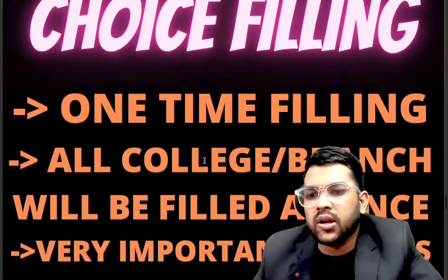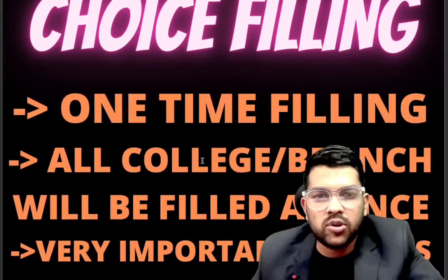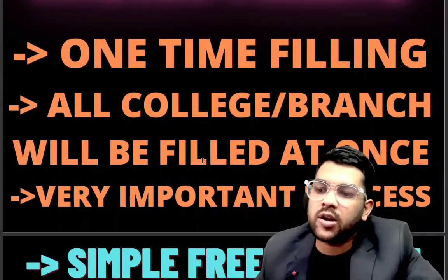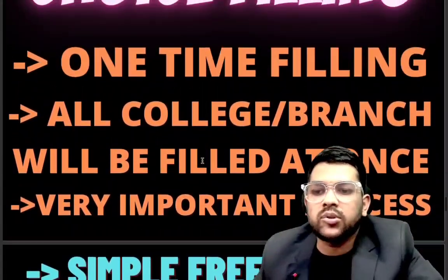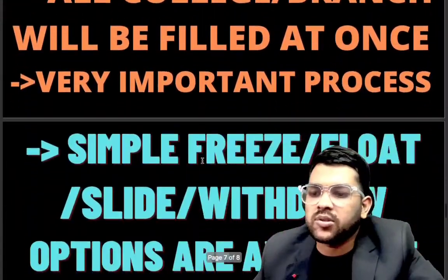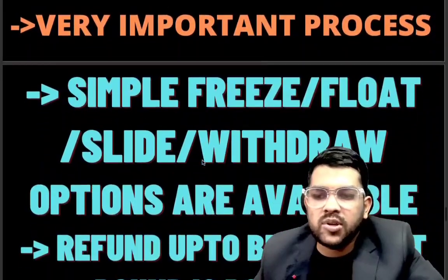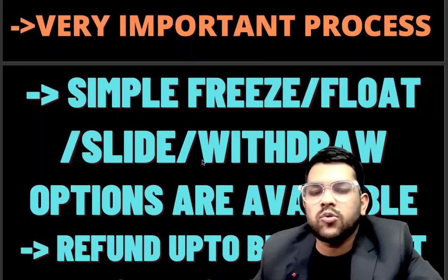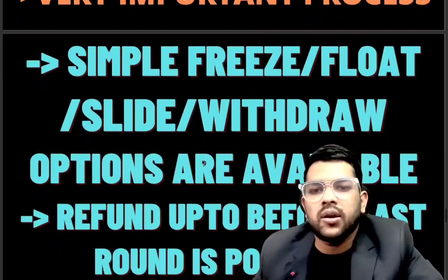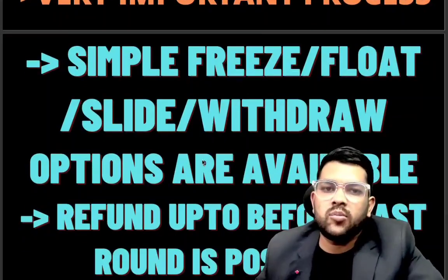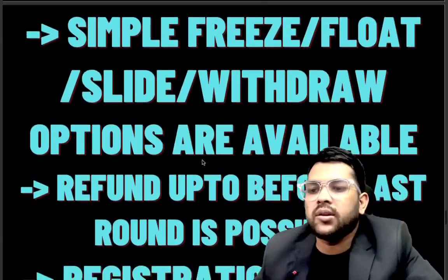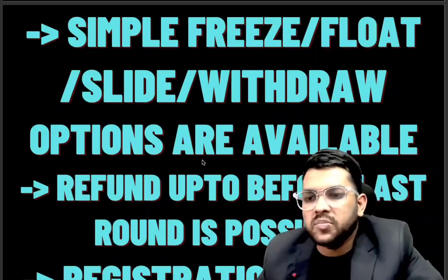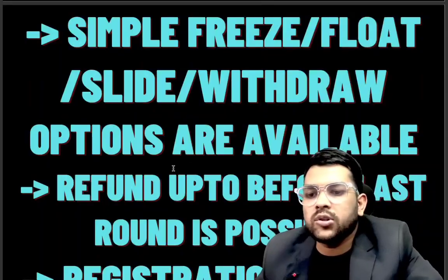Choice filling is done only once — you cannot change it after submission, so any mistake will cause problems. All colleges and branches must be filled at once. There are simple options: Freeze means you are happy with the allotted seat and accept it in the first round itself. Float means you move to the next round for a potentially better seat. Slide means you want the same campus but a better branch. Withdraw means you don't want the seat at all.